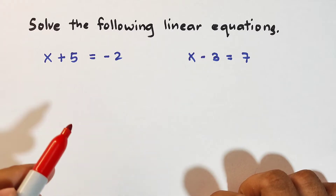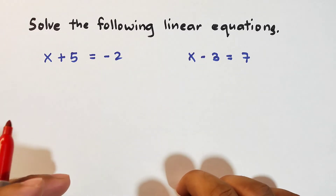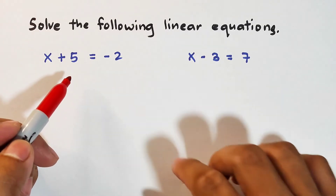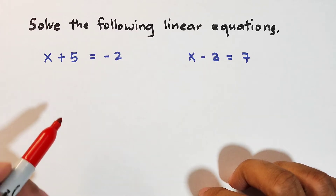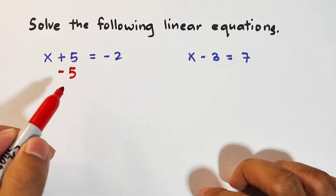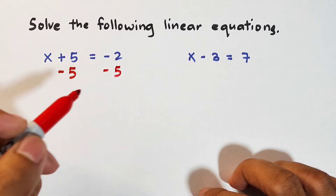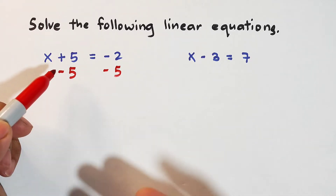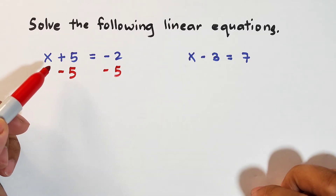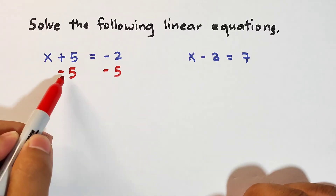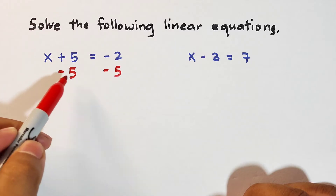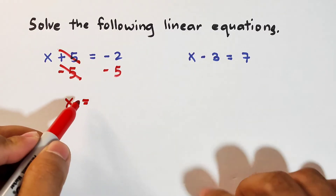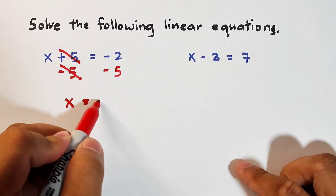Our target here is to find a solution of x that will satisfy this entire equation. We need to find a value of x — when we substitute it into x plus 5, it will become negative 2. To do that, we need to subtract each part of the equation by 5. The reason is that positive 5 will be eliminated if we subtract it by 5 — we find its additive inverse. This is the subtraction property of equality. So 5 minus 5 is 0, simply cancelling it out. What remains on the left side is simply x. And then negative 2 minus 5 is simply negative 7.